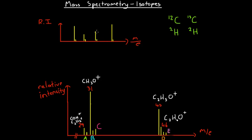All we're doing is slightly increasing the total mass of our molecule. If we have hydrogen-2 replacing one of the hydrogen-1 atoms, the mass-on-charge ratio is going to be one greater than if all of the hydrogens were hydrogen-1, assuming the charge is plus one. We're slightly increasing the mass of our entire molecule, and therefore any fragments containing these isotopes will have slightly higher mass-on-charge ratios, causing these extra little peaks.